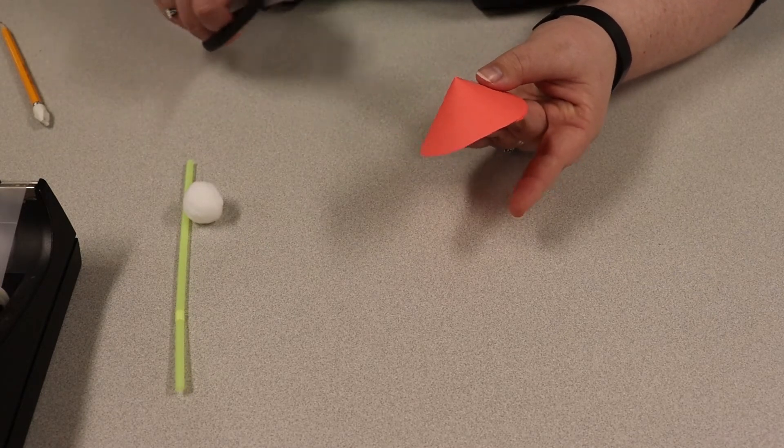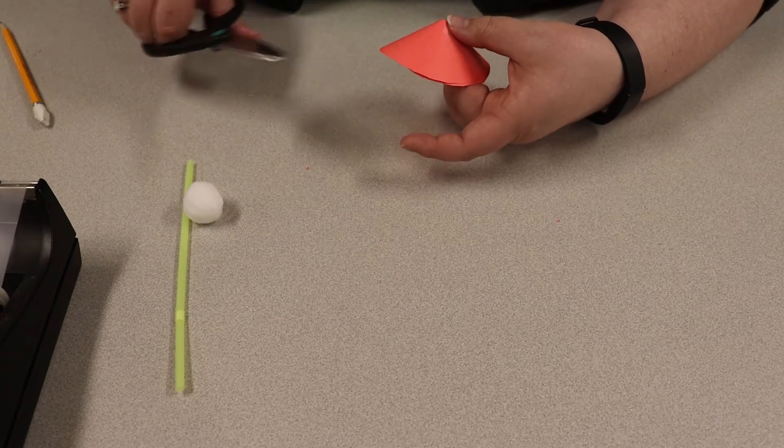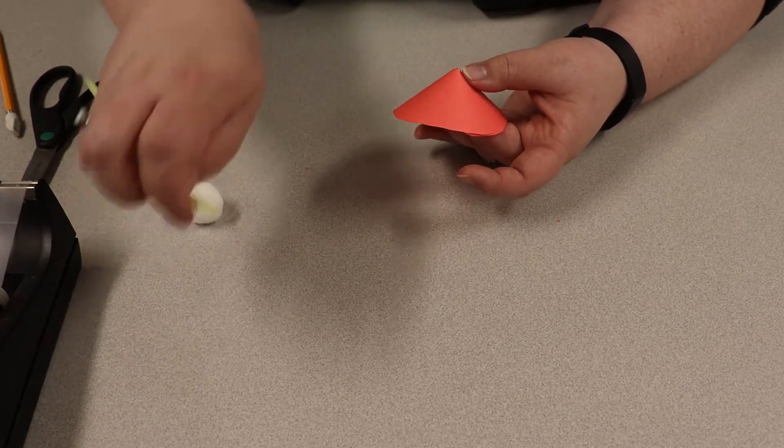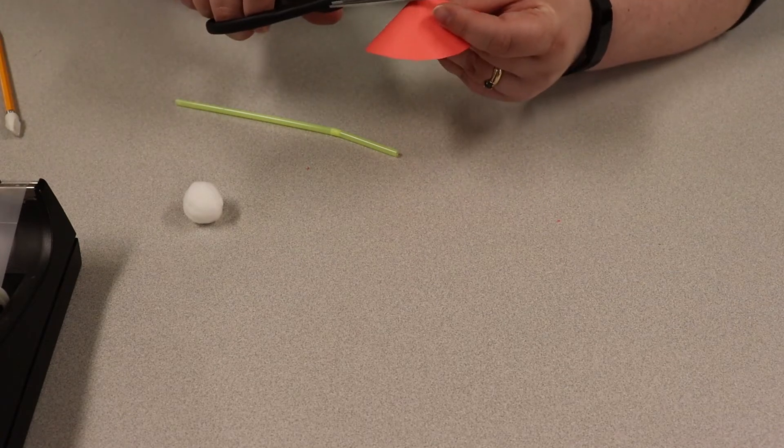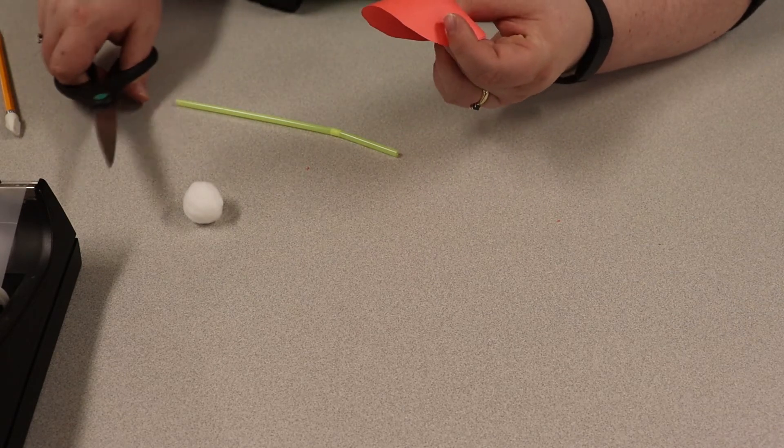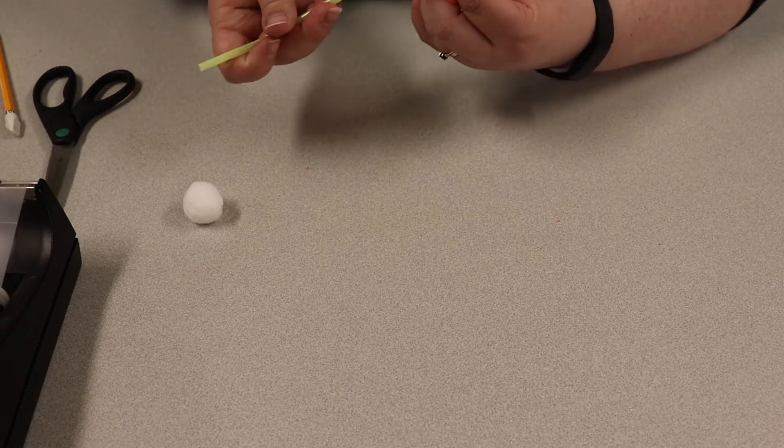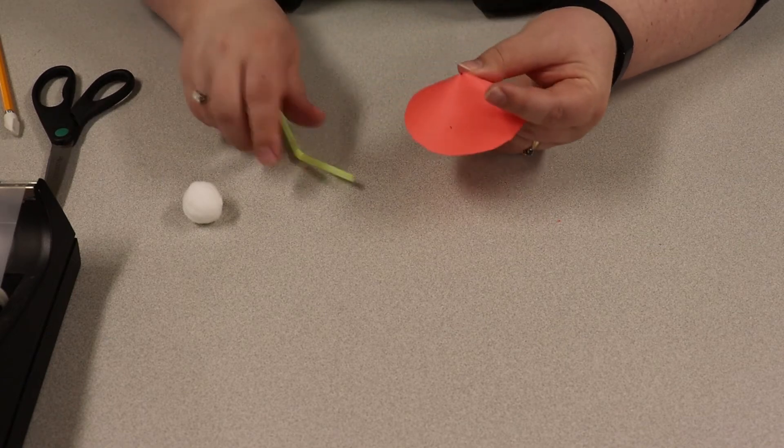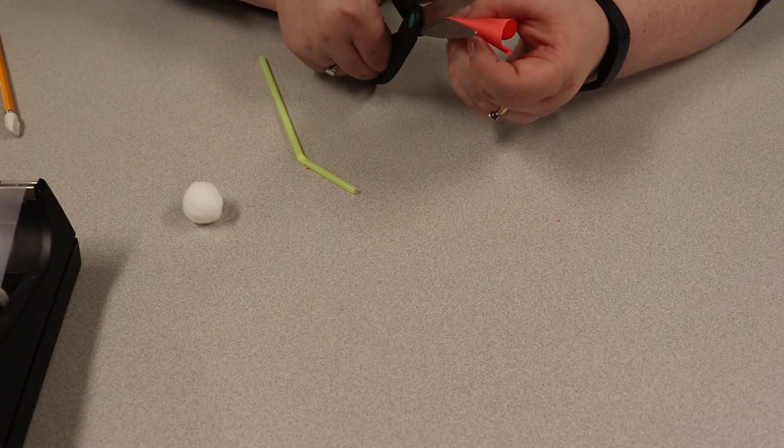We are then gonna very lightly cut off the tip here. Not too much though, so we don't have a big gaping hole. Just enough. We're gonna stick our straw through. It's still a little bit too small. My first one was too big so I'm being a little overly cautious here.